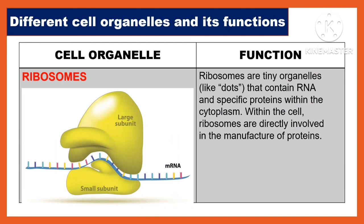Another cell organelle is the ribosome. Ribosomes are very tiny organelles like dots that contain RNA and specific proteins within the cytoplasm. Within the cell, ribosomes are directly involved in the manufacture of proteins.